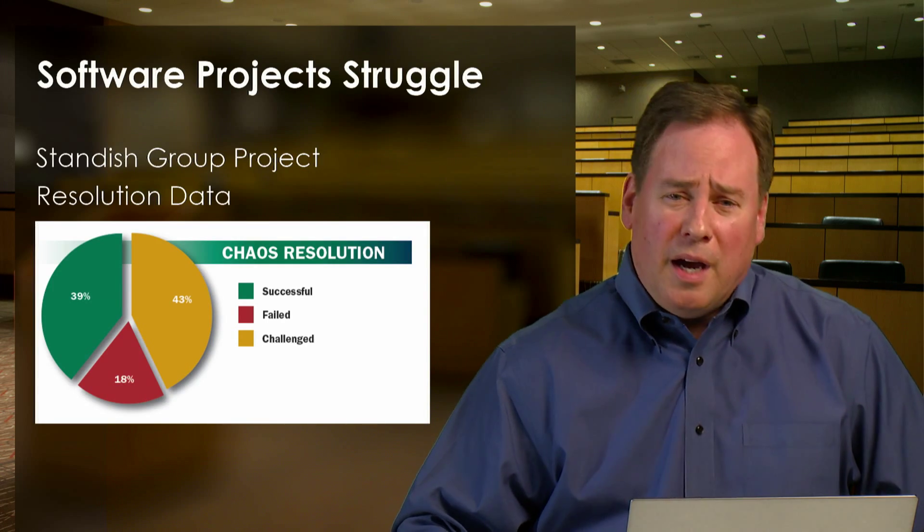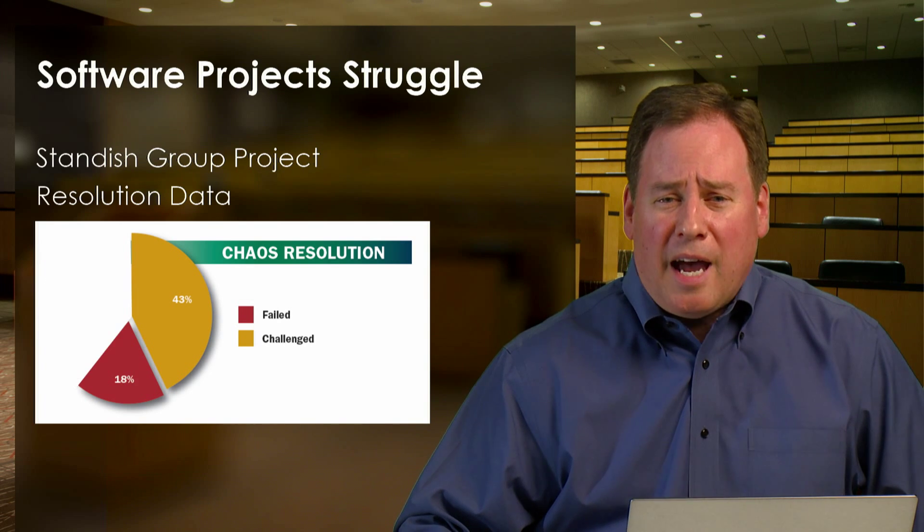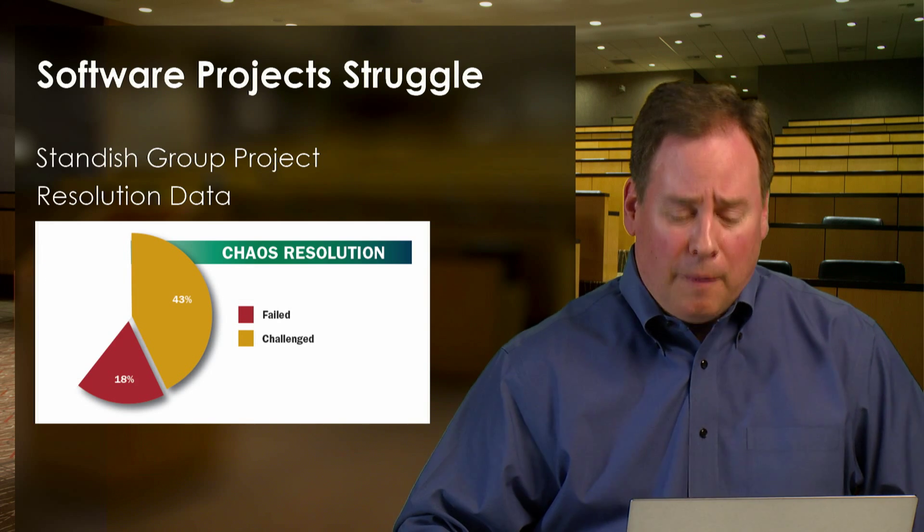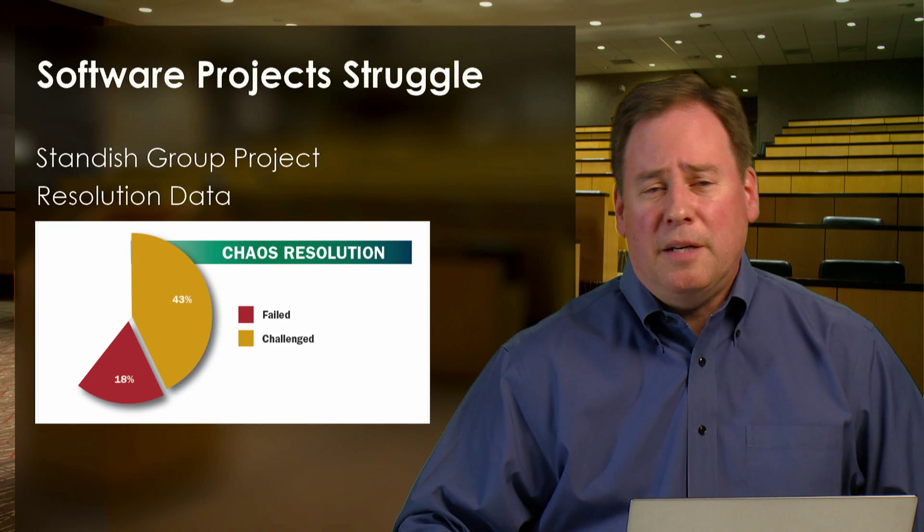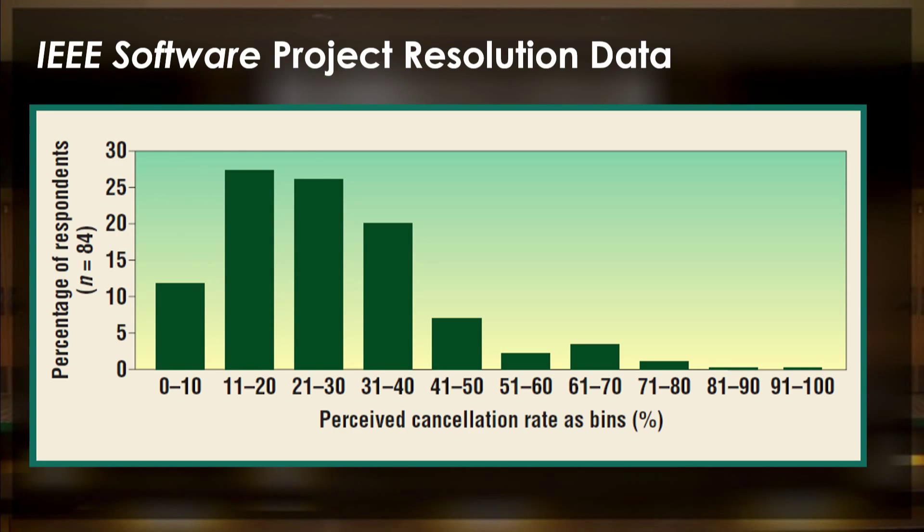The Standish Group Chaos Report shows that most projects actually are challenged or fail. A minority of projects succeed. This report from the IEEE Software Magazine on perceived cancellation rates shows that the most common perceived cancellation rate is 11 to 20 percent.